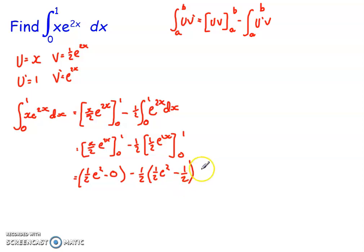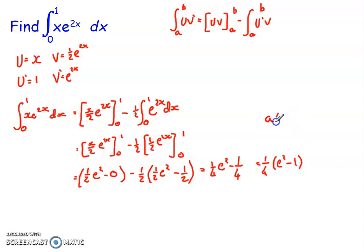Simplifying that all together, I end up with ¼e² minus ¼. Depending on the format the question wants, we can write it in one of three ways: as ¼e² − ¼, or taking ¼ as a common factor: ¼(e² − 1). If a numerical value is required, plugging into a calculator gives approximately 1.597, or to one decimal place, 1.6. Definite integrals aren't any more difficult — we just have to remember to apply the limits at every single stage of the integration.